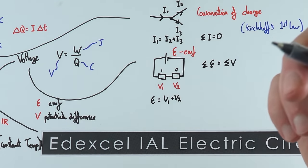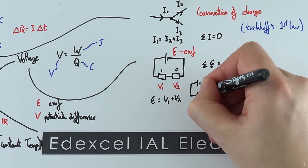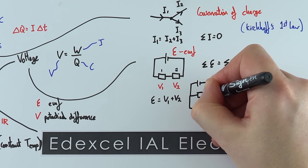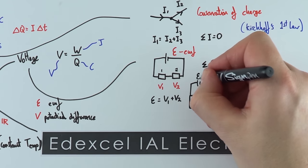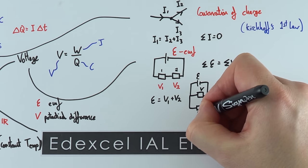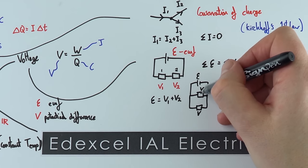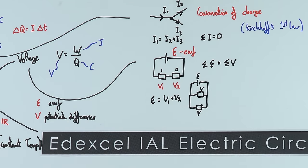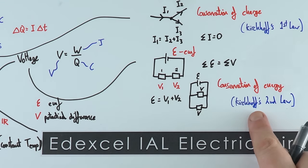In a parallel circuit, where different components are on different loops, around any closed loop the sum of the EMFs equals the sum of the potential differences. So with a 6-volt supply, we'd have 6 volts across each parallel branch. This comes from conservation of energy and is Kirchhoff's second law.